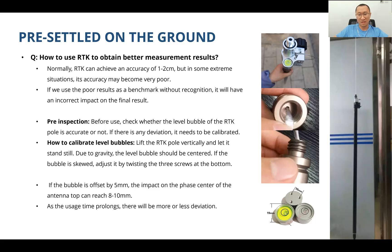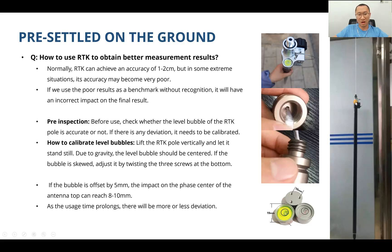To calibrate the level bubble, lift the RTK pole vertically and let it stand still — use a line to hang it upright. Due to gravity, the level bubble should be centered. If the bubble is skewed, adjust it by twisting the three screws at the bottom to bring it back to center. For example, if the bubble is offset by 5 mm in the middle of the pole, the impact on the phase center of the RTK antenna at the top might reach 8 to 10 millimeters.